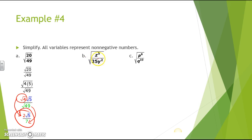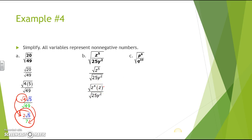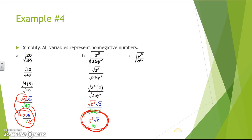For part b, we have the square root of z to the fifth over 25y squared. Z to the fifth breaks into z to the fourth times z, since 4 is a perfect square and 4 plus 1 gives z to the fifth. Over 25y squared, we take the square root of z to the fourth times the square root of z over the square root of 25y squared. The square root of z to the fourth is z squared, and the square root of 25y squared is 5y. So the final answer is z squared times the square root of z over 5y.